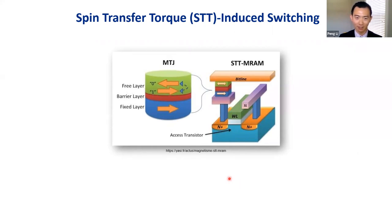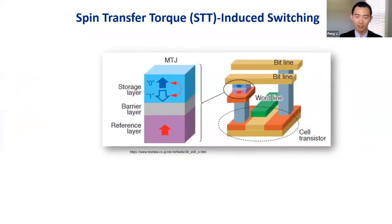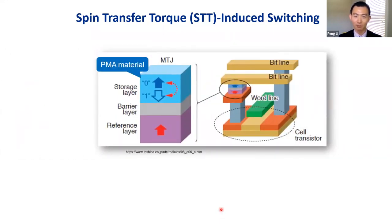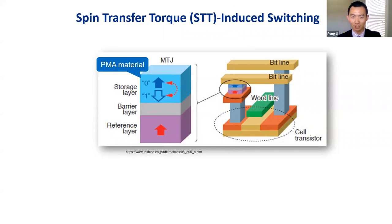In MTJ devices we have three layers, one being a free layer. In previous generations the free layer had in-plane anisotropy, but to increase recording density we need to change the free layer from an in-plane magnetic material to a perpendicular magnetic anisotropy (PMA) material. This is a very useful technique to realize high-density recording for MRAM.